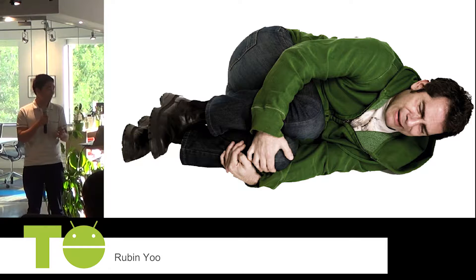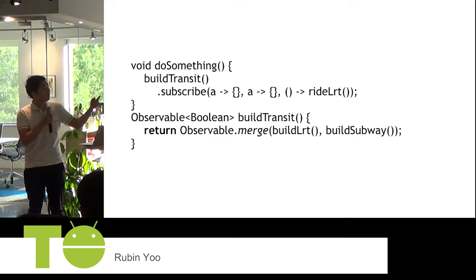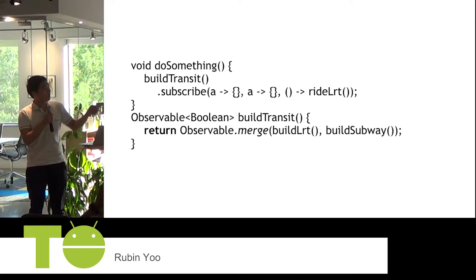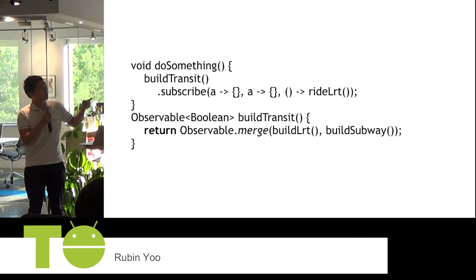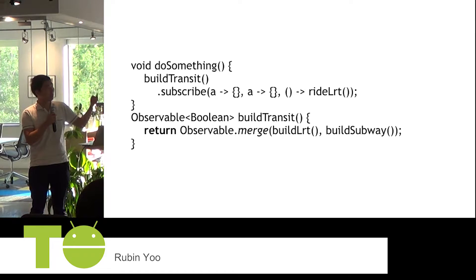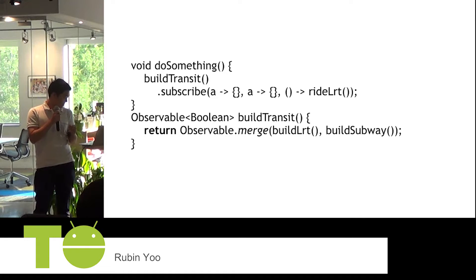Ever since then I've been thinking about how to improve this — I don't want to look at so many nested listeners. With RxJava, if I could go back, I'd have written it differently. In the code here, you see buildLRT and buildSubway. The buildTransit method waits for both LRT and subway to finish, then you subscribe to it and can ride the LRT when all the transit is finished. BuildLRT and buildSubway are asynchronous tasks. With listeners you'd have nested listeners or a class maintaining two listeners, which is not easy code to write. RxJava is better this way.